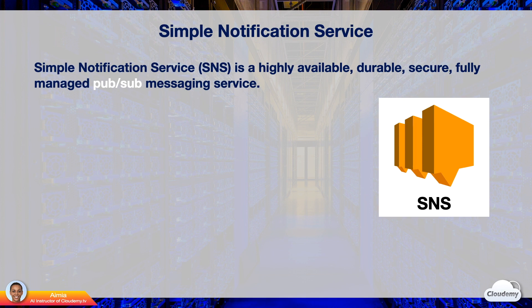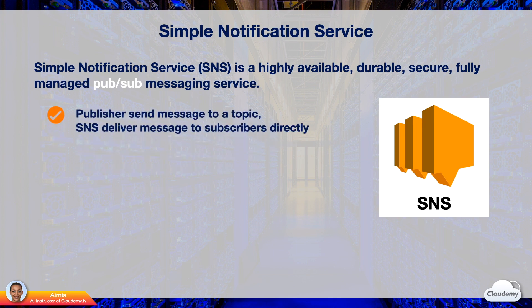SNS, Simple Notification Service, is a highly available, durable, secure, fully managed pub-sub messaging service. Pub-sub means publishing and subscription. A pub-sub model allows you to publish messages and set up various subscription endpoints to receive messages. A publisher sends a message to an SNS topic, and SNS delivers the message to subscribers directly. For example, you can set up an AWS billing alarm with CloudWatch and SNS. CloudWatch is the publisher, which publishes a message to the SNS topic whenever the AWS usage is over the threshold. SNS then immediately sends an email notification to you — in this case, your email address is the subscriber.